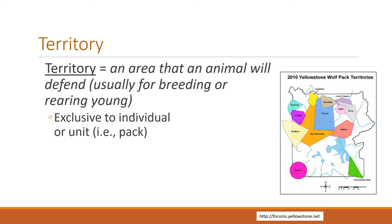Territory is a little different — it's an area that animals will actively defend, usually a breeding or rearing-of-young area. Animals may have home ranges, and within that, part of it might be a territory. Wolves are a good example of animals with very defined territories they defend against other packs, as shown in a map of wolf pack territories. Many animals don't have territories, but some do, and that needs to be kept in mind when managing habitat.